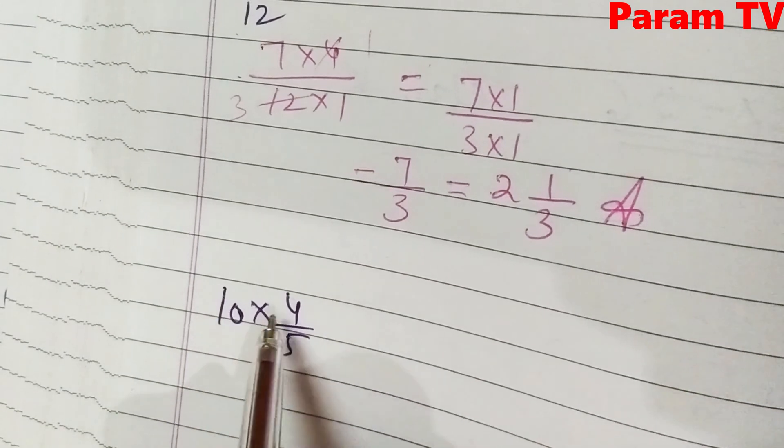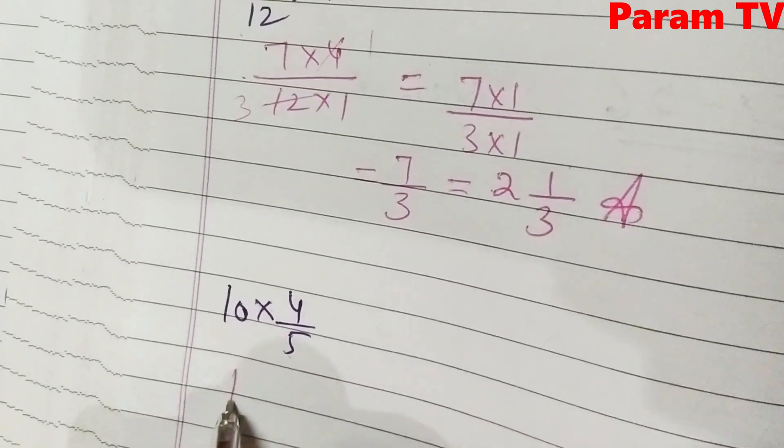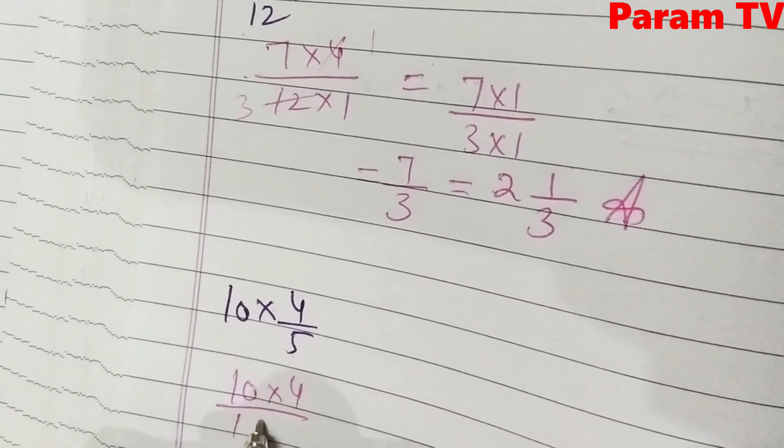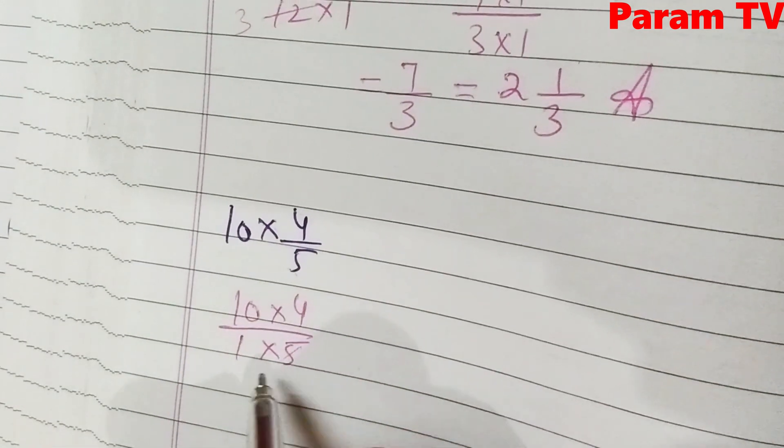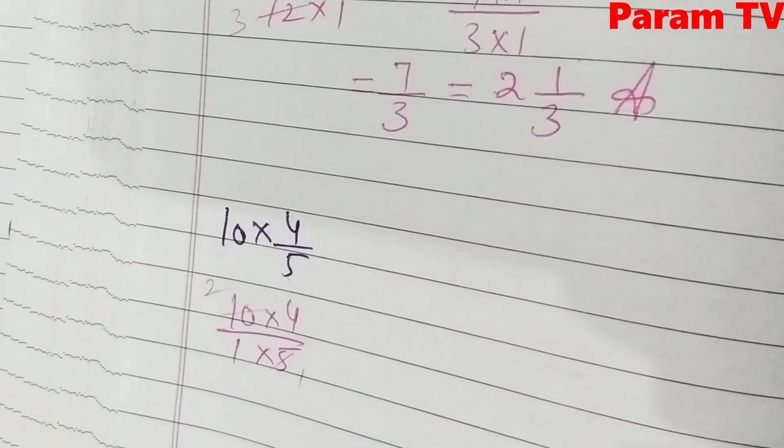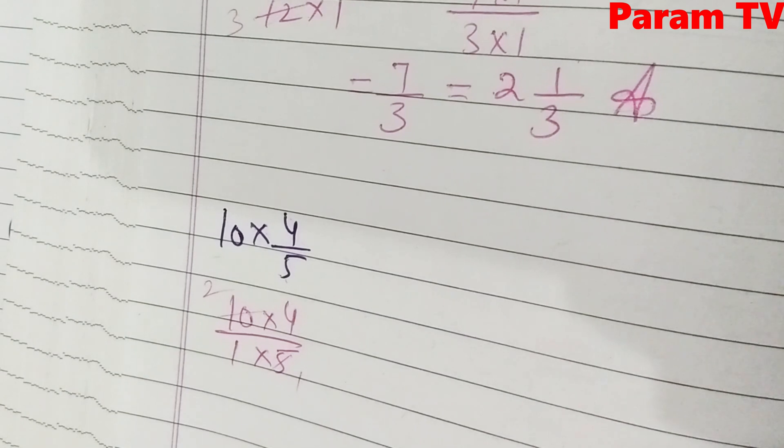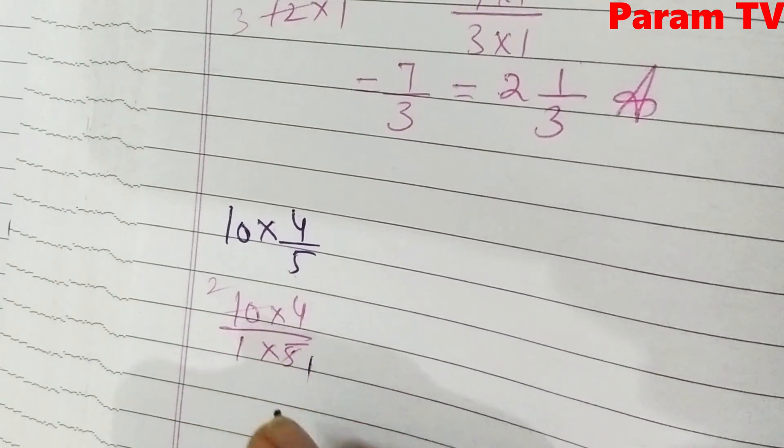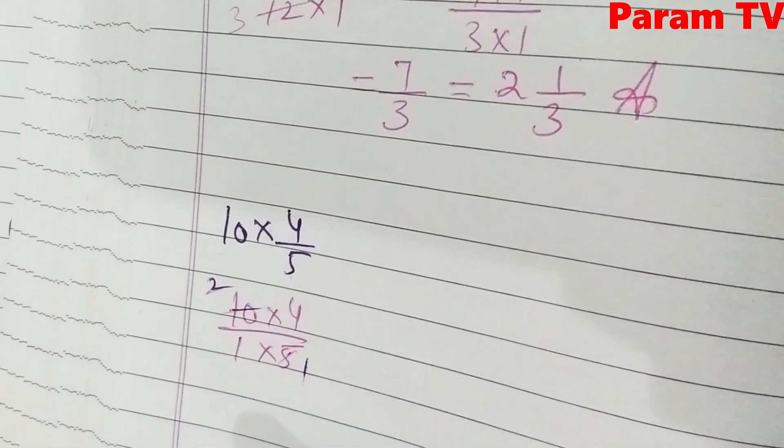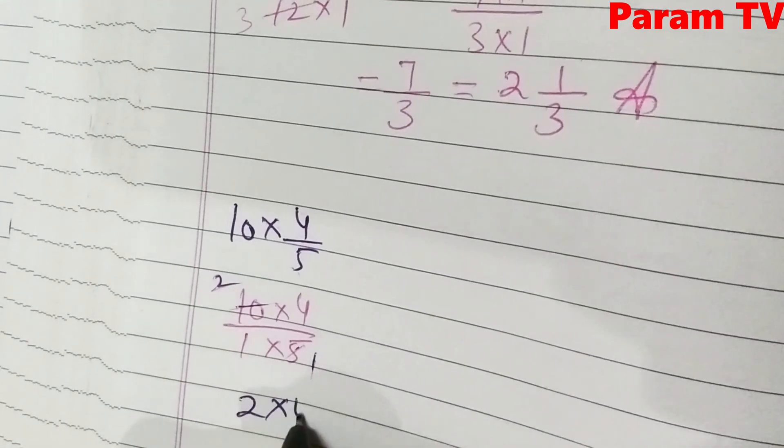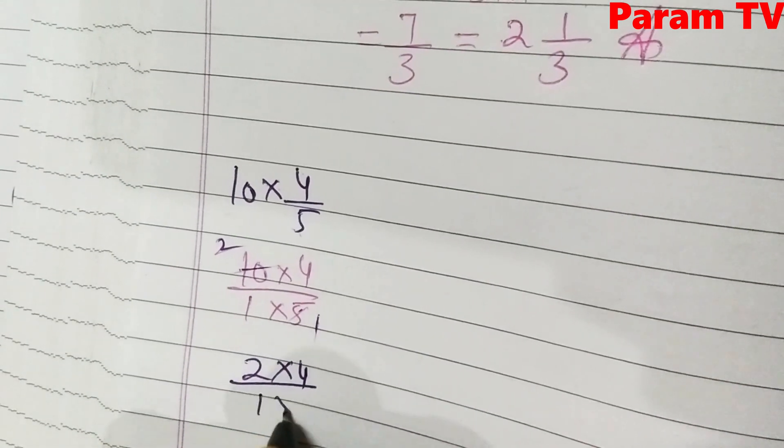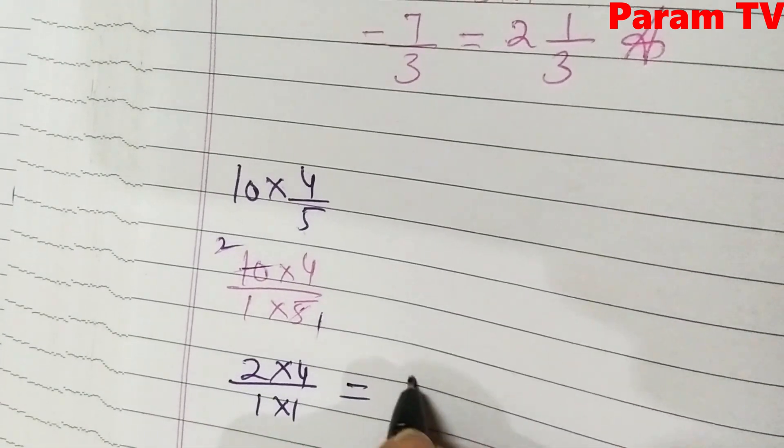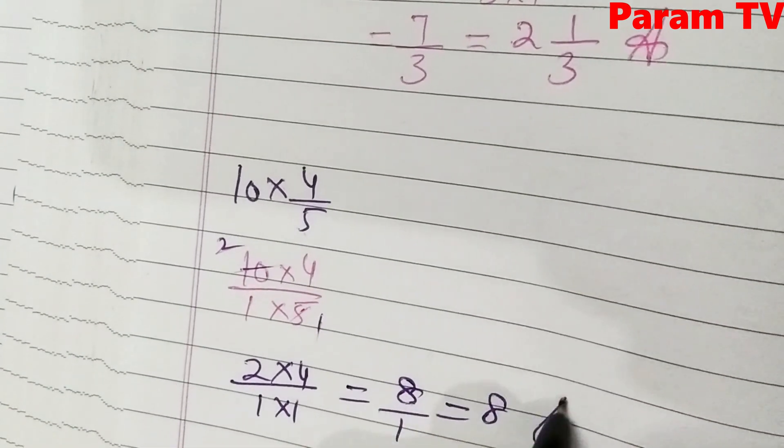Next is 10 into 4 by 5. So 10 into 4 over 1 into 5. Look, 5 1s are 5, 2s are. I cancel it. This is 5. So 5 1s are 5, 5 2s are 10. So what is left? 2 into 4 over 1 into 1. This will give you 4 to the 8 over 1. 8 over 1 means 8 answer.